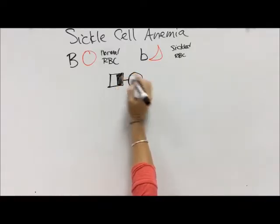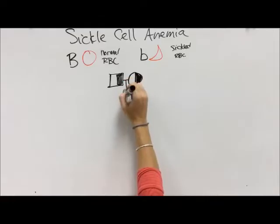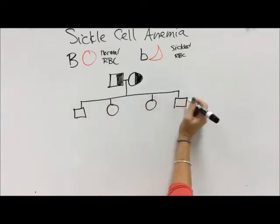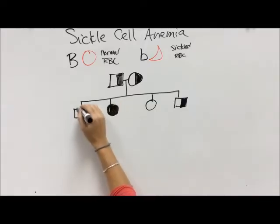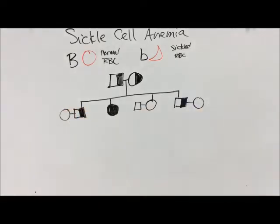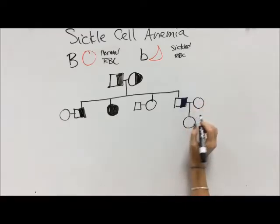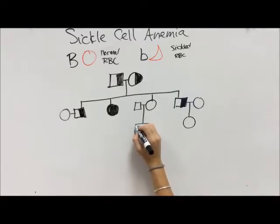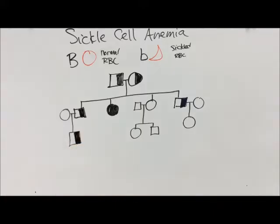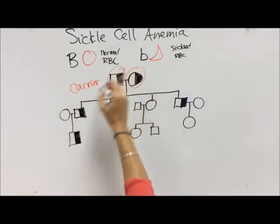Let's say we have two people — a male and a female, grandma and grandpa — and each of them carries the sickle cell information but they don't actually have sickle cell anemia. They have four children. The youngest is a carrier, the second daughter has sickle cell anemia, and then we have another carrier. Three of the kids have children of their own: the youngest has a daughter, the second daughter has two children — a female and a male — and the oldest has one male child who is also a carrier.